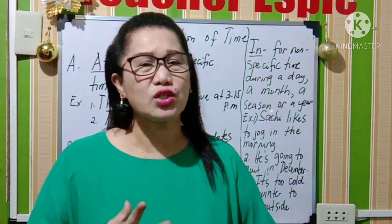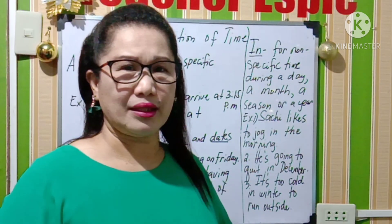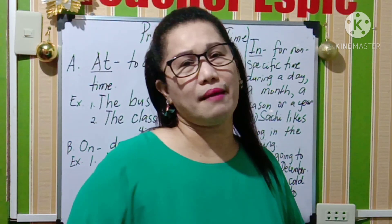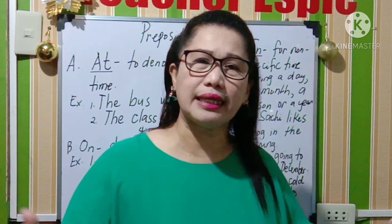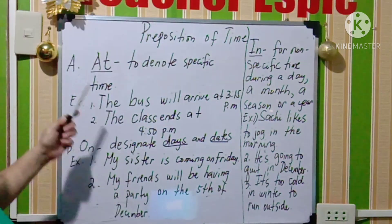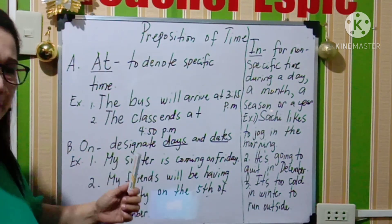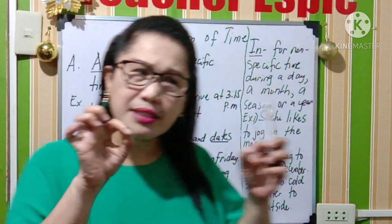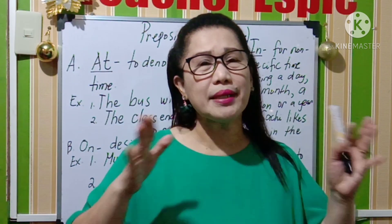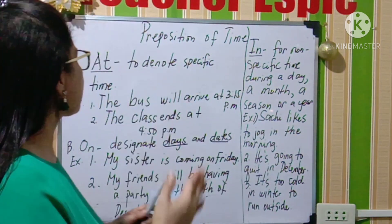I have here preposition of time. Paano ba natin gagamitin ang in sa time? Paano natin gagamitin ang at sa time? At paano po natin gagamitin ang on sa time? So I have here on the board — when we are talking about at, it denotes specific time. Ibig sabihin, pag sinabing specific, may exact oras talaga. So gamitin natin ito guys — it denotes specific time.